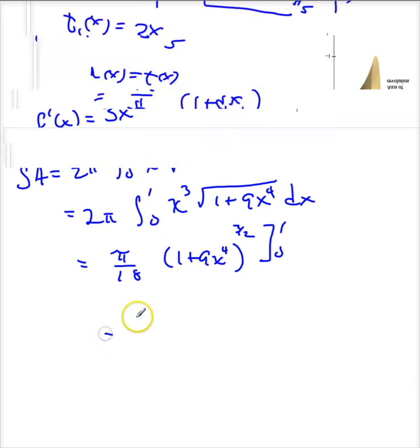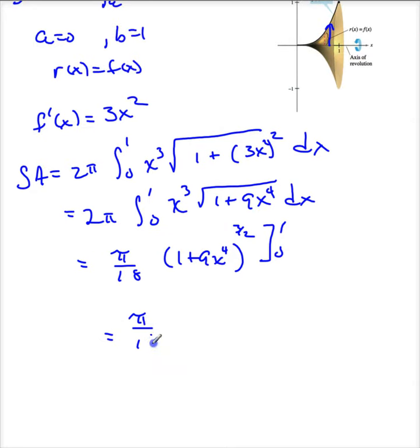So this becomes π over 18 times (1 + 9·1⁴) to the 3/2, minus 1 to the 3/2.